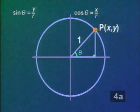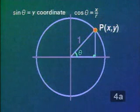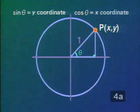Now, if you look at the sine and cosine of angle theta, we can see that the sine of the angle is the ratio Y over 1, or simply Y. The cosine ratio is X over 1, or X.